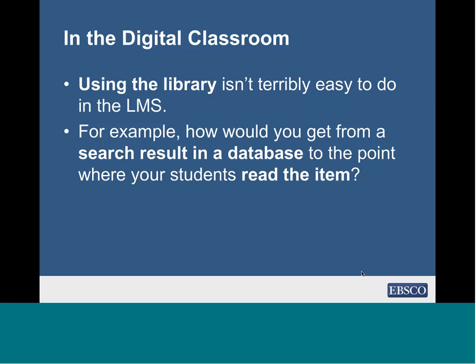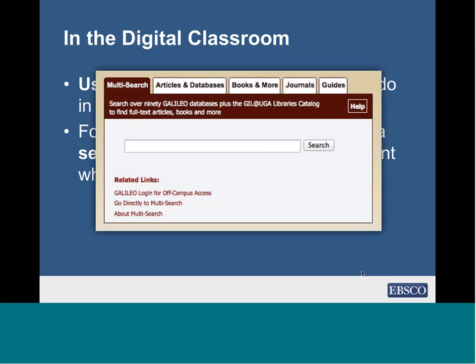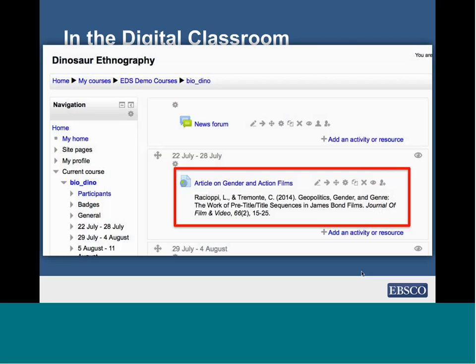To give you an example — and I'll encourage you to use the chat box or Q&A to help answer this — let's say you're a faculty member and this is your library search box on your homepage. You as a teacher want to assign your students a couple of articles out of the library's databases. What steps would you have to take to go from the library search box to a point where you've actually got a great link in your classroom that your students can follow to get to that reading? Take a couple of seconds to think through that process.